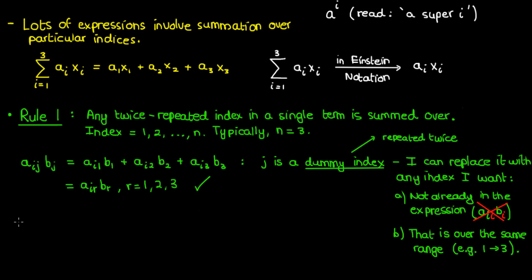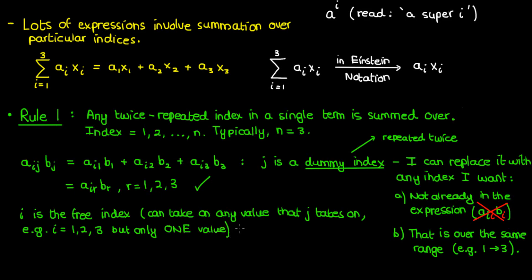So I've talked about dummy indices like j, but what about indices like i? Well, i is something we call the free index. Like the dummy index, the free index can take on any value that the dummy index can take on, so 1, 2, 3 for example. The difference is that the free index is not summed over, which means that it can only take on one of these values in a given term. In other words, i can be either 1, 2, 3, etc, but it can only be one of these numbers and not multiple.